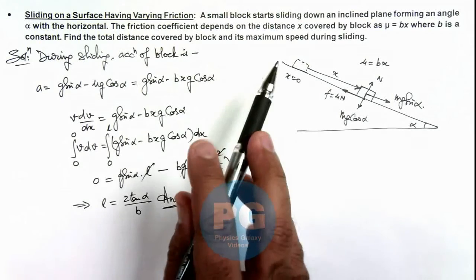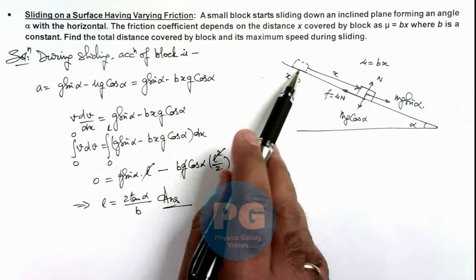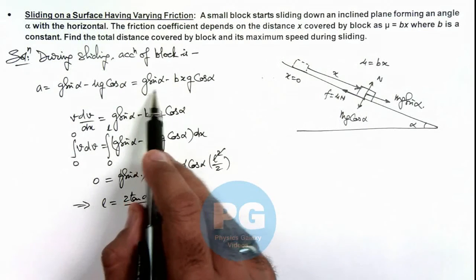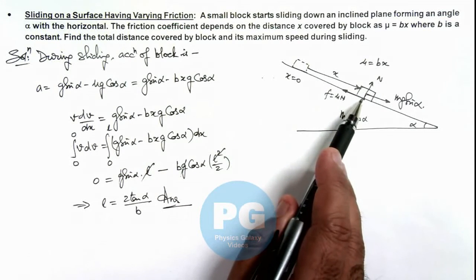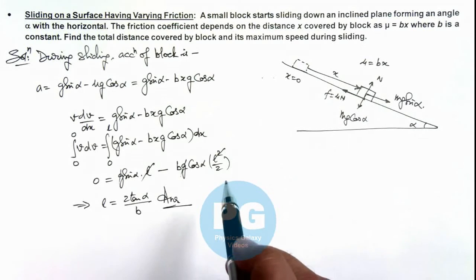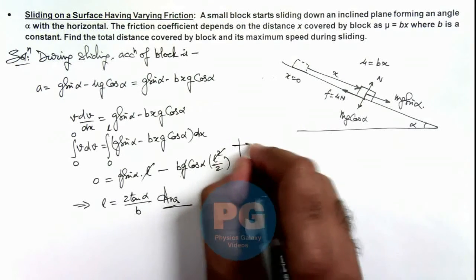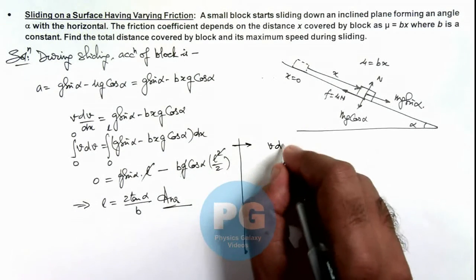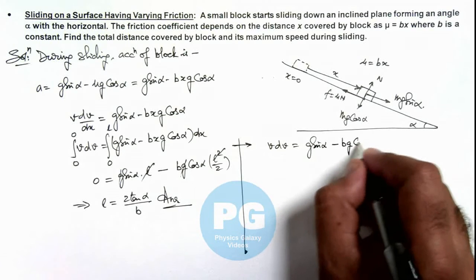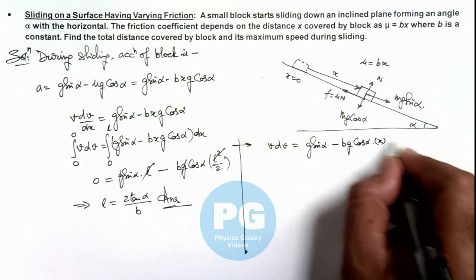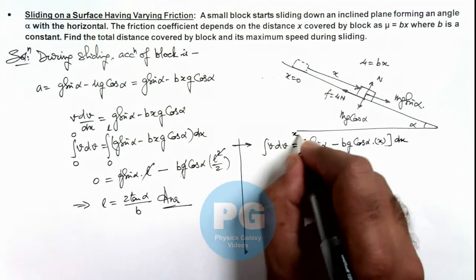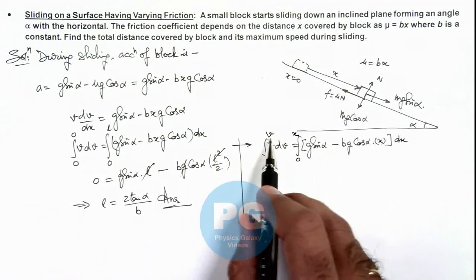We are also required to find the maximum speed during sliding. As the block slides, as x increases the acceleration decreases. When acceleration becomes zero, the speed of the block is maximum, and then the speed decreases until the block comes to rest. Continuing with the same expression, v dv equals (g sine alpha minus bxg cosine alpha) dx, integrating from zero to x and zero to v gives speed as a function of x.